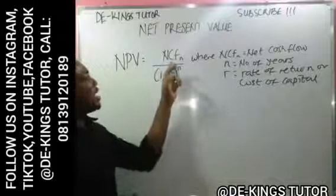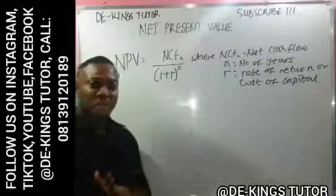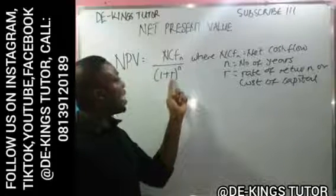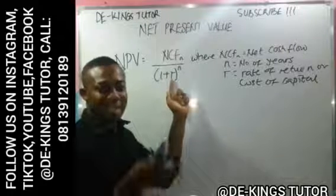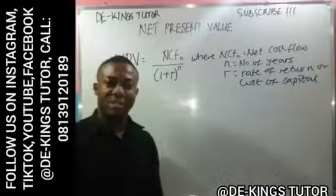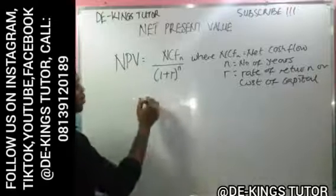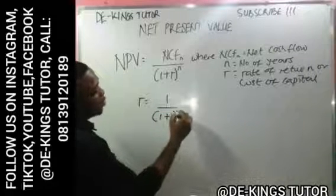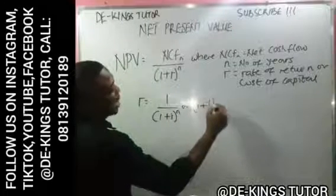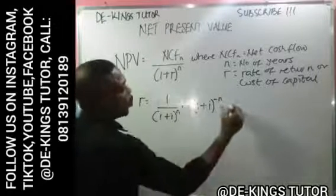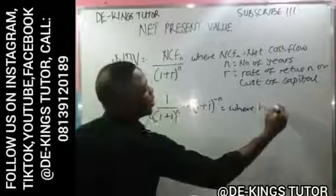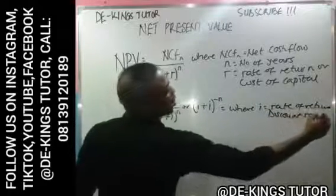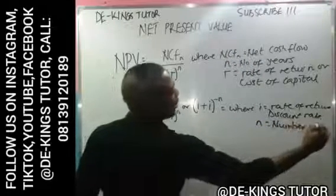This formula is used with the net cash flows for N, which represents the various years of the project — whether 2, 3, 4, 5 years or more — divided by (1 + R), where R is the rate of return or cost of capital. N stands for the number of years. The discount factor R also has its own formula: 1 over (1 + i) raised to the power N, or equivalently (1 + i) raised to the power minus N, where i is the rate of return or discount rate and N is the number of years.